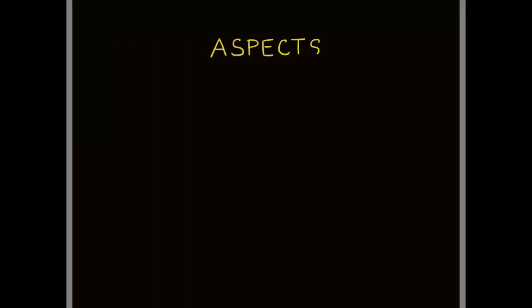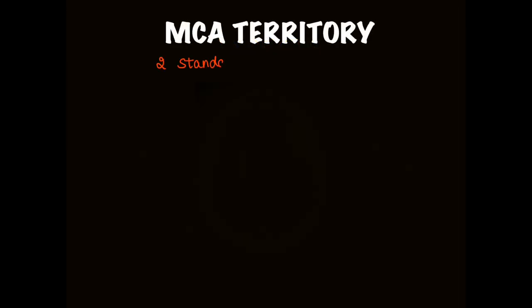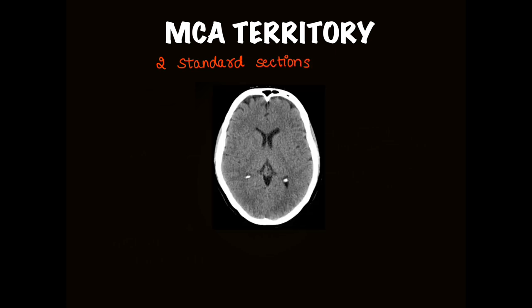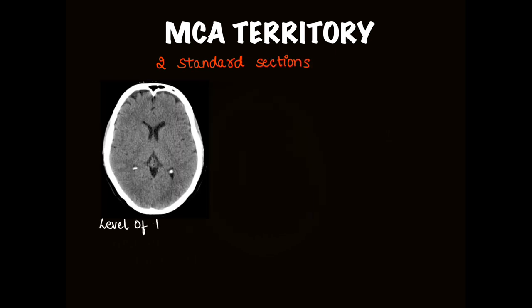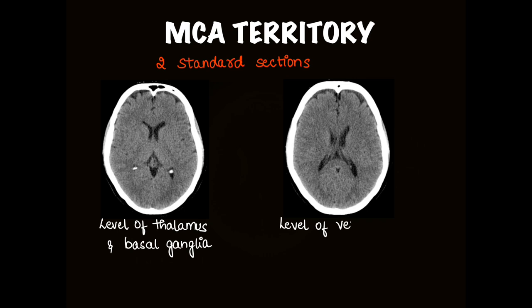ASPECT score stands for Alberta Stroke Program Early CT Score. It has 10 points and is more commonly used for MCA territory stroke, also used for PCA territory stroke. For MCA territory, two standard sections of NCCT head are taken for scoring: one at the level of thalamus and basal ganglia, and the other at the level of ventricles just above the basal ganglia section.